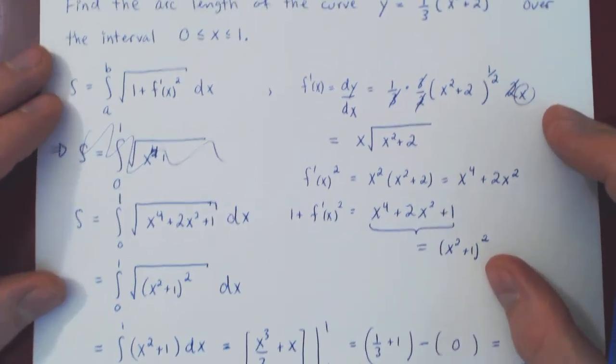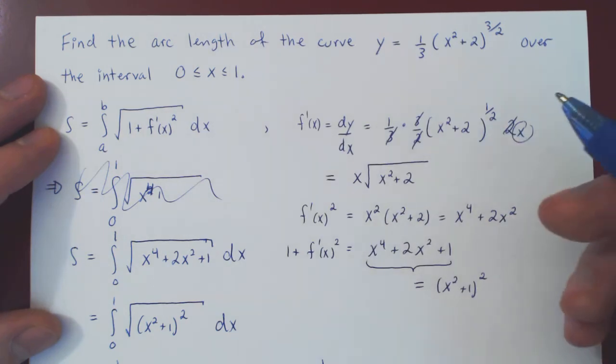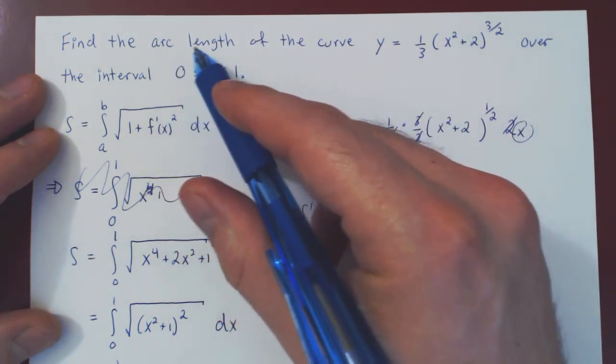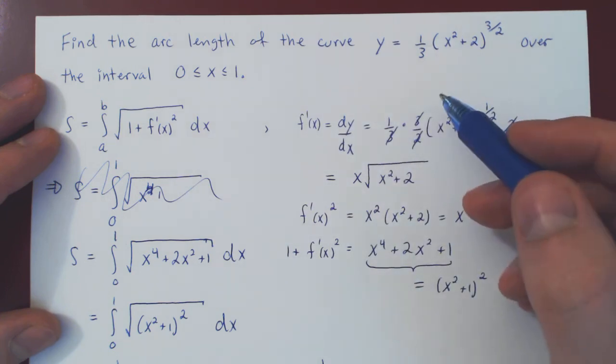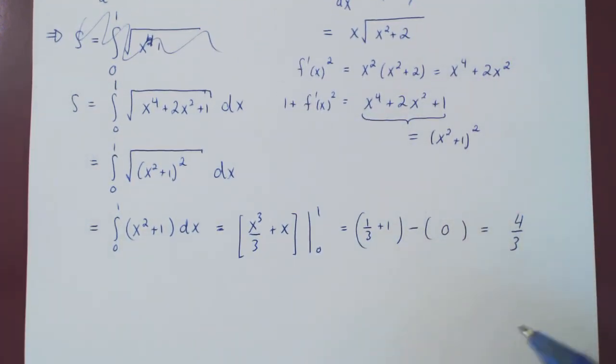So if you were to sketch the graph of this function on the interval from 0 to 1 and ask how long is the curve in the picture in your graph, the answer is exactly 4 over 3. And that's it.